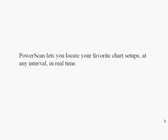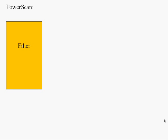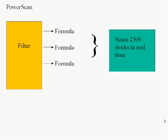PowerScan lets you locate your favorite chart setups at any interval in real time. It does so as follows. PowerScan has what we call filters. A filter is something that you can create, or there are some built-in ones as well. Each filter has formulas. A formula is some kind of occurrence, like volume is above normal, or price is above a certain moving average. There are 50 or so different indicators you can use that most traders like, and you can give your own criteria for those formulas. When all those formulas are true, you're alerted. That filter is applied against 2,500 stocks in real time — this is all done for you, and it'll alert you when one of them trips.